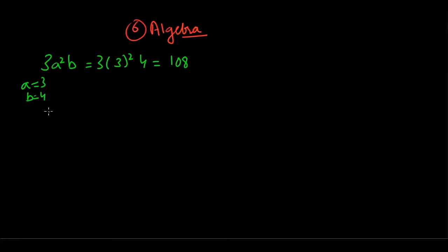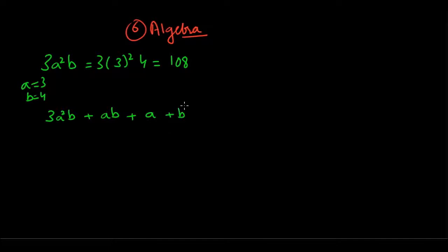You can have more than one term in the algebraic expression. So along with the 3a squared b term, you could have an ab term, a term with just a, or a term where b is cubed. You can have many of these terms together.